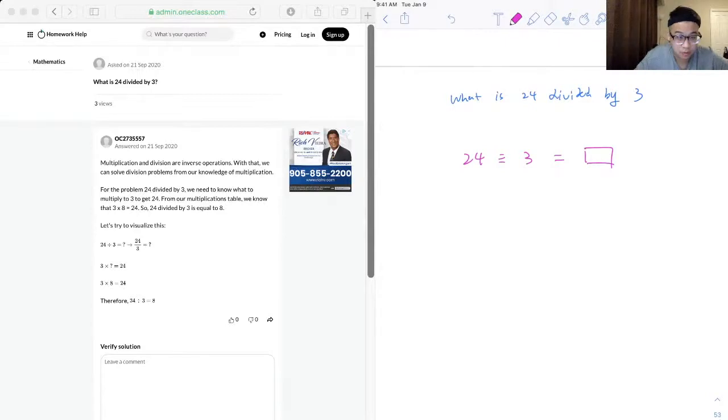So, from our multiplication tables, we know that 3 times 8 is 24. So, 24 divided by 3 is equal to 8.